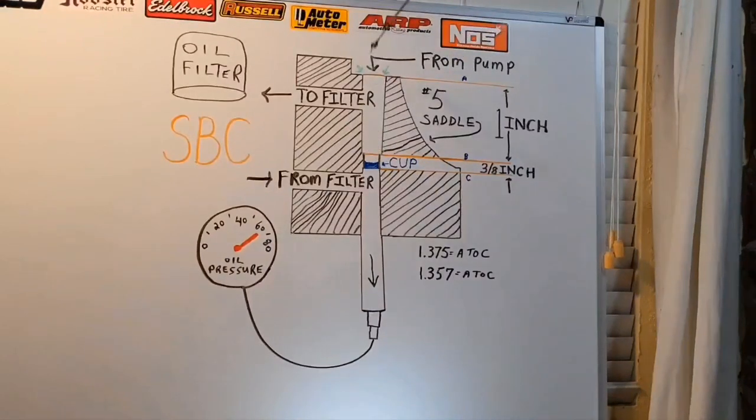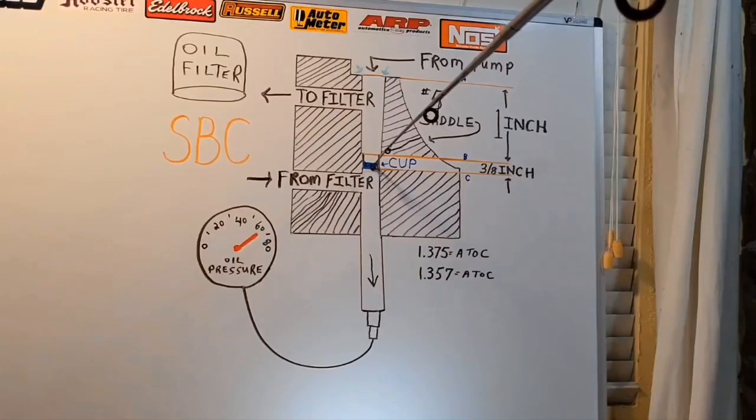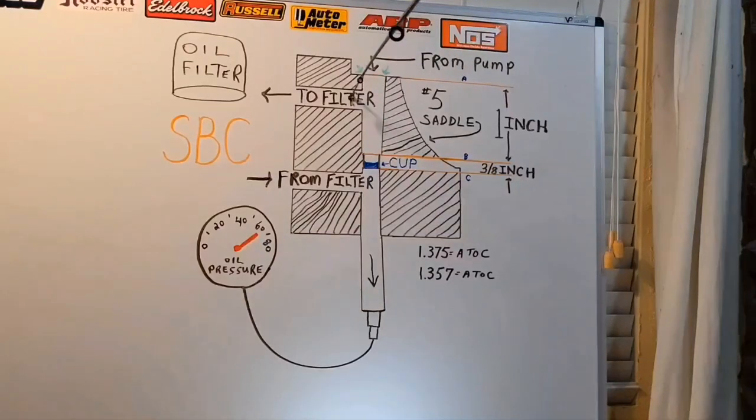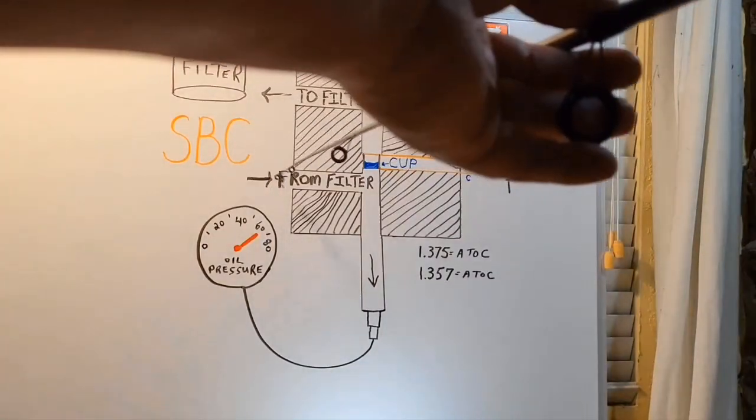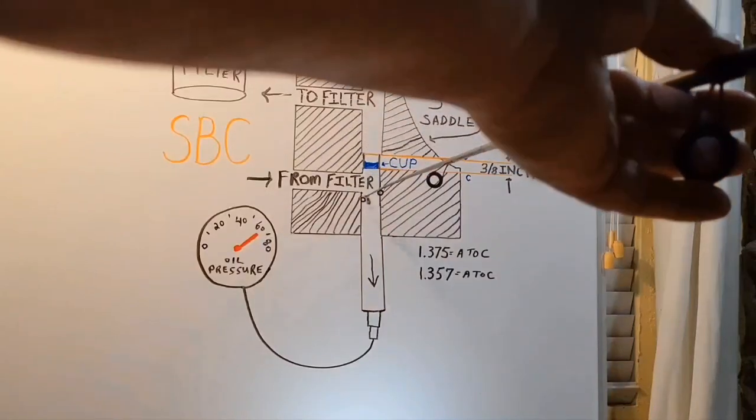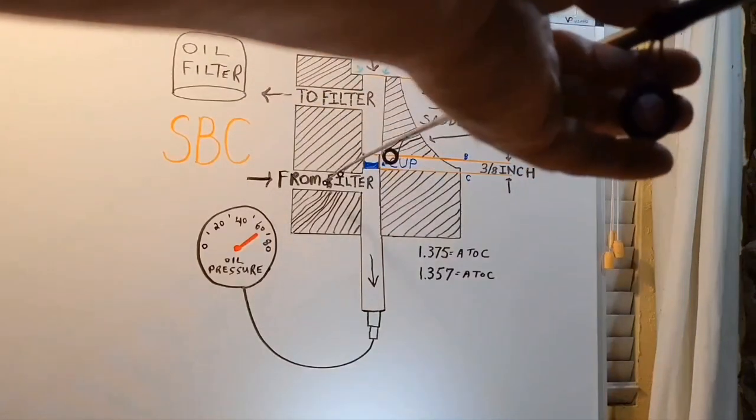It hits the cup here, and the only place to go is out this passage here to the filter. Oil flow from here is cleaned by the filter, and then the only place it can go is to this passage back to the main passage.